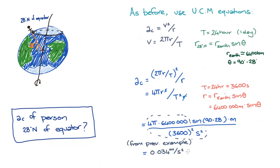So we can then see that the centripetal acceleration in this example is 0.034 meters per second squared times sin theta.